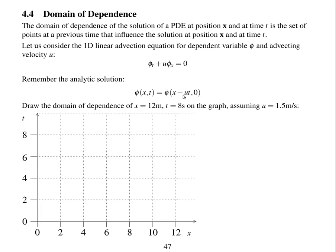To help understand the domain of dependence, draw the domain of dependence of position x at time eight seconds on this graph, assuming a wind speed of 1.5 metres per second. Position x equals 12 metres is here and t equals eight seconds is here. What is the set of points at particular times that influence the solution at this point? Draw a line on this graph which is the domain of dependence, and pause the video to have a go before I continue.